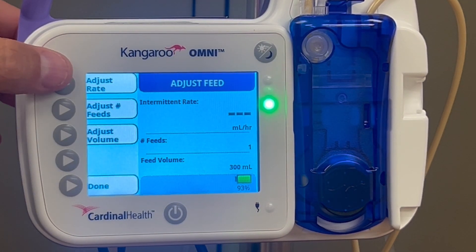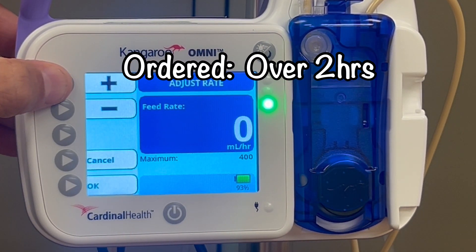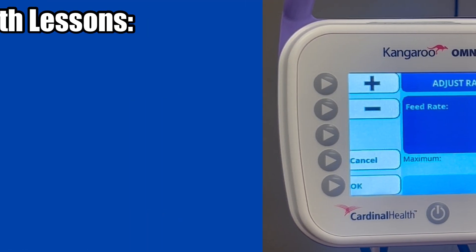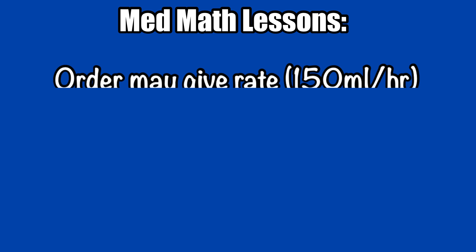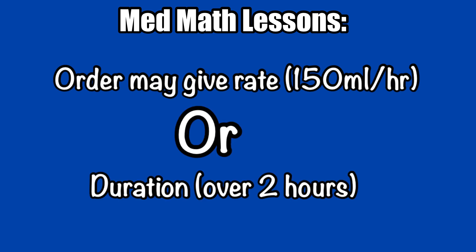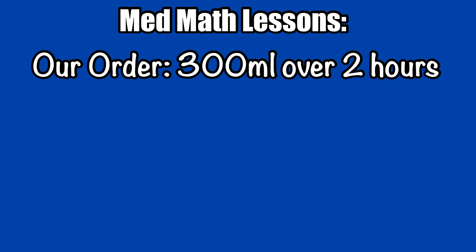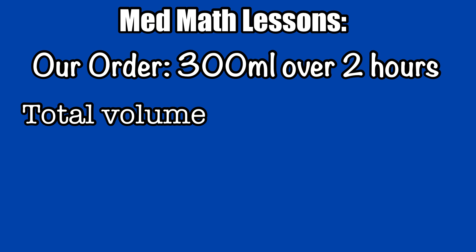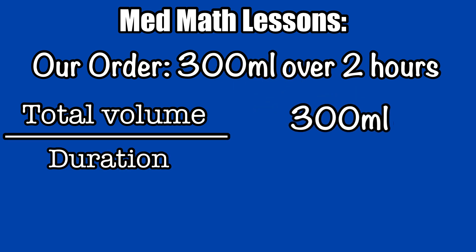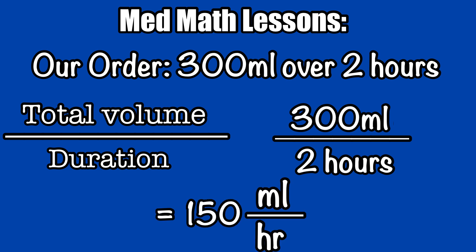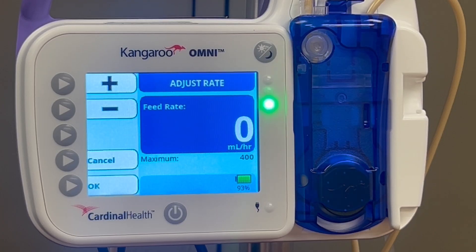Next, push Adjust Rate. Our order said to administer this bolus over 2 hours, which isn't giving us the rate directly, but we can figure it out. Some orders may specify the rate, but if it only gives you duration, you'll have some math to perform. If we need to deliver 300 milliliters over 2 hours, divide the total volume in milliliters — 300 — by the duration of the infusion in hours — 2. This gives us 150 milliliters per hour. That's our rate. Input that value.